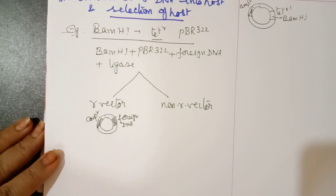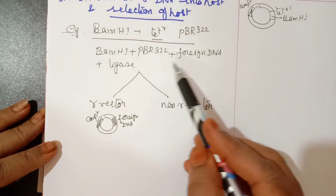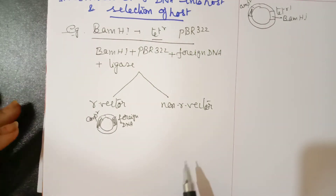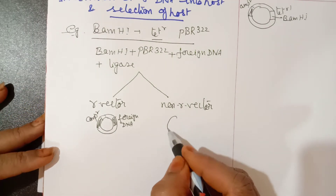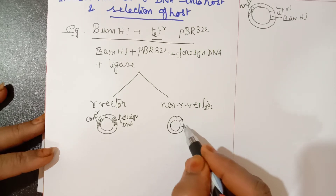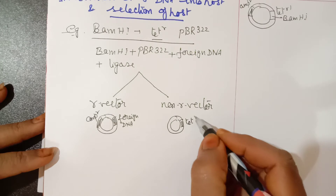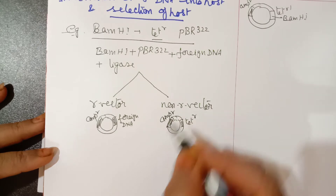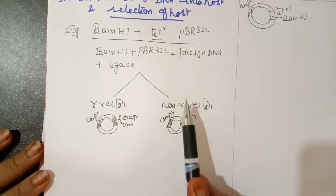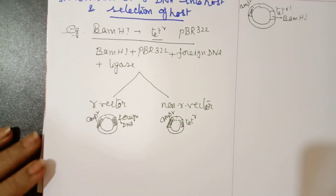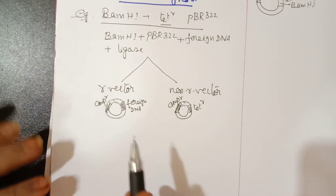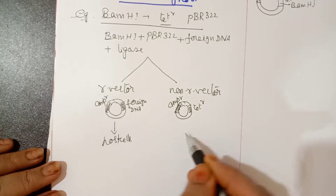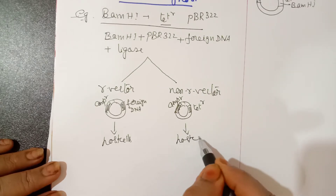A non-recombinant vector is one where there is no insertion of foreign DNA at all. That means the non-recombinant vector will have the intact tetracycline resistant gene and also the ampicillin resistant gene — both will be present, because the foreign DNA was not introduced. These vectors are then separately introduced into host cells, i.e., E. coli.